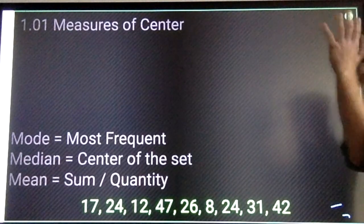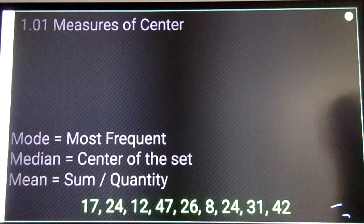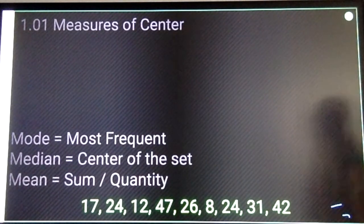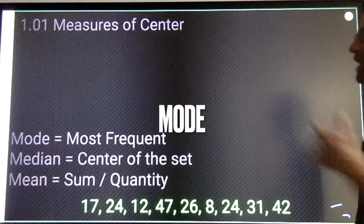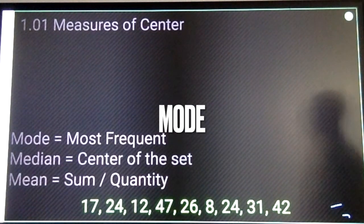Data set, measures of center. Three measures of center. We got mode. Mode is what number or what item shows up most frequently.